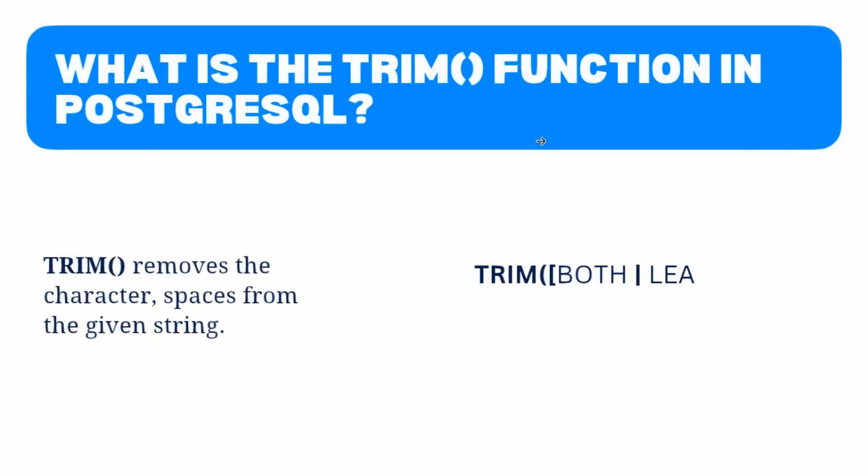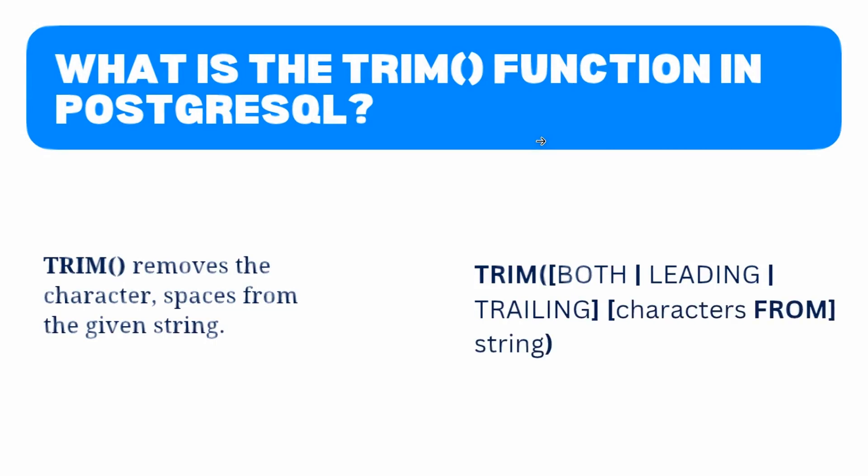Let's start by discussing what the trim function is. Trim function is a PostgreSQL string function that removes a specified character or spaces by default. This function removes the characters or spaces from the beginning or end of the string. This function is very useful when you have data with leading or trailing spaces that you need to remove.